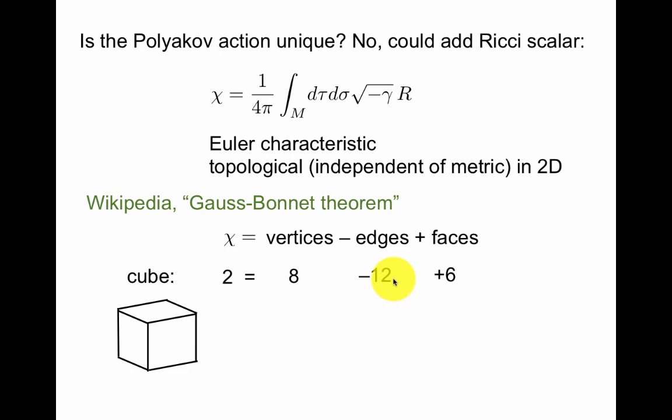It has 8 vertices, 12 edges, and 6 faces. If you're interested in this, take a look at the definition of Euler characteristic and the Gauss-Bonnet theorem. This leads to a whole slew of mathematics.